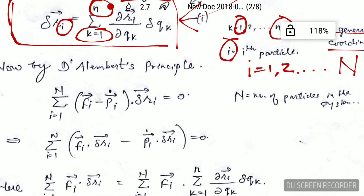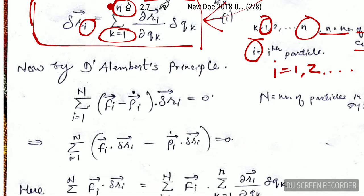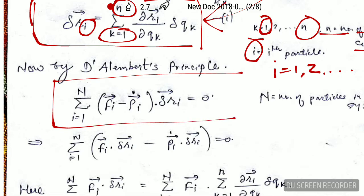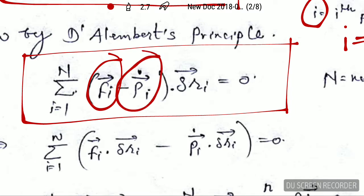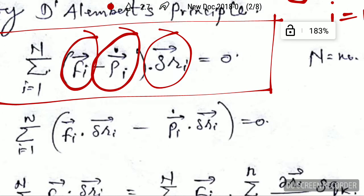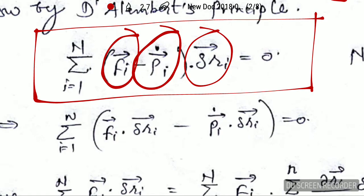Now we have to use D'Alembert's principle. D'Alembert's principle is written here — if you are unaware of it, please go back to my previous video on D'Alembert's principle. In this equation, this term indicates the force on the ith particle, this is the reverse effective force on the ith particle, and this is the virtual displacement.